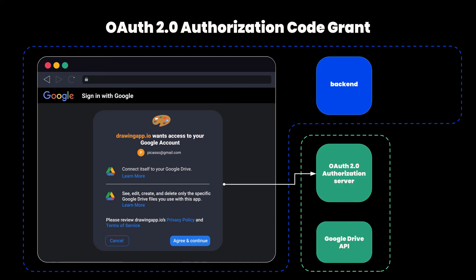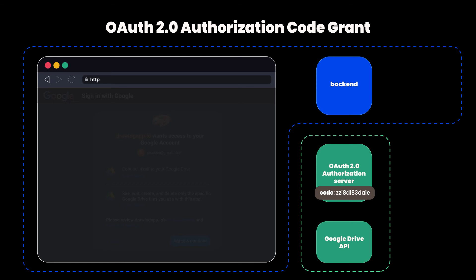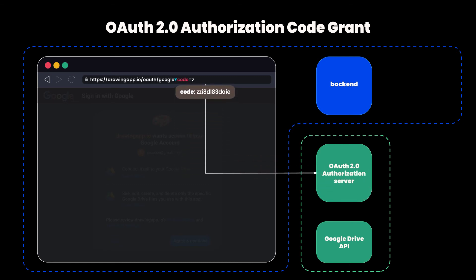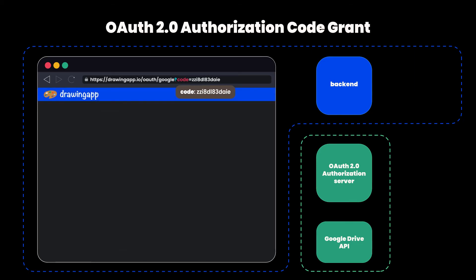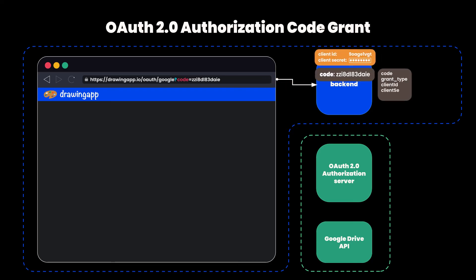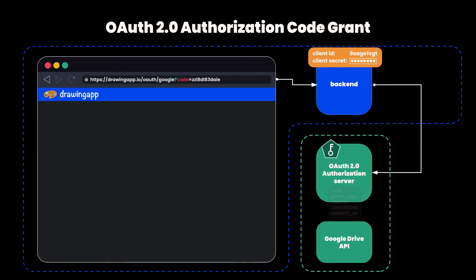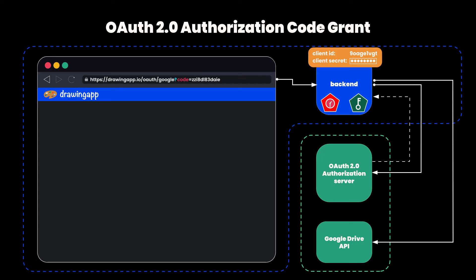If you click yes, the authorization server redirects the user back to the third-party application. The authorization server creates a so-called authorization code and attaches it as a query parameter while redirecting the user back to the original application — in our case, the drawing application. Think of the authorization code as a short-lived one-time voucher which you can exchange for an access token with a limited lifetime and limited privileges. The drawing app backend then takes this authorization code and sends it along with its client ID and client credentials — in the simplest case a client secret — to the authorization server. Depending on the authorization server's configuration, the client may also get a refresh token, which is a longer-lived token that allows you to get fresh access tokens when the current one has expired. The client can then use this access token on the protected resource to finally get access.